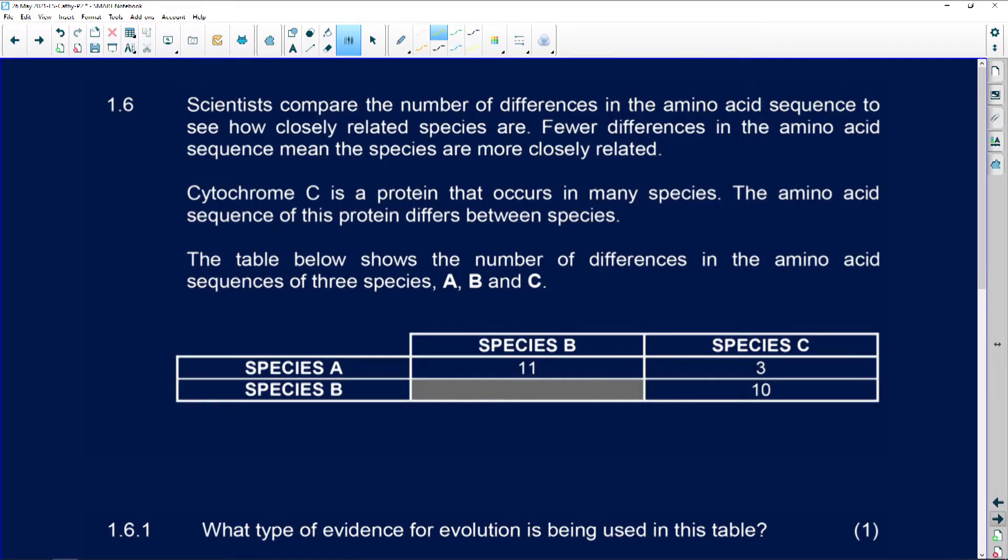Next question, 1.6. Scientists compare the number of differences in the amino acid sequence. Remember, when they're looking at the amino acid sequence, they're looking at the genetics.